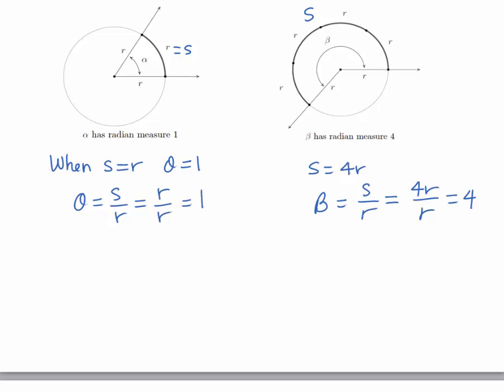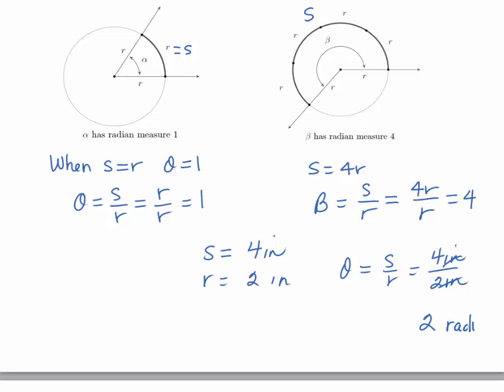Since a radian measure is a ratio, there are basically no units — they cancel each other out. If s was equal to 4 inches and the radius was 2 inches, the angle measurement would be s over r, which is 4 inches over 2 inches. The units cancel and we get 2. We can write radians if we want, but it's redundant. When theta equals 2, it's implied that it's in radians. If we want to show degrees, we write the degree symbol.